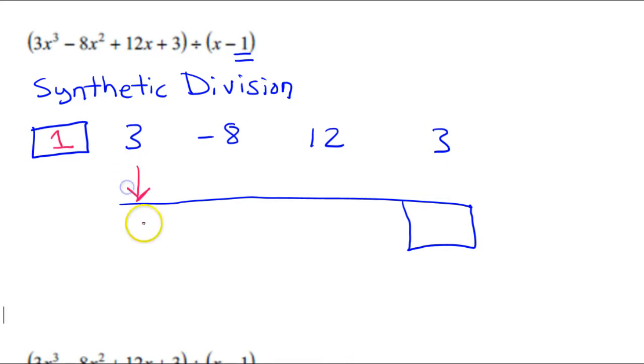And you begin the process just by bringing down the first number. Then I'm going to multiply and put that number here, always going back to the box. So 3 times 1 is 3. If I add these up, I get negative 5.